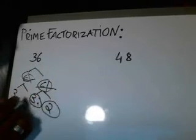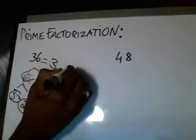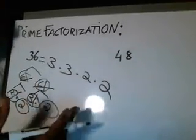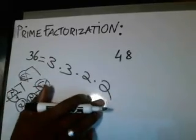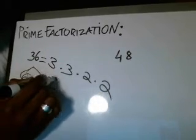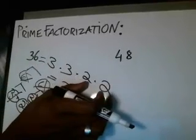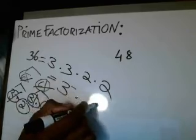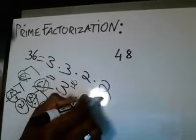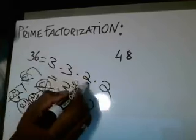Can you break down the 2? No — circle it. The 3? No. The 2? No. The 3? No. So the prime factorization of 36 is 3 times 3 times 2 times 2. Most professors will ask you to simplify this using exponents. You write down each individual number and put the number of times it's repeated as the exponent. 3 is repeated twice, so 3 squared. 2 is repeated twice, so 2 squared. So it's 3 squared times 2 squared.